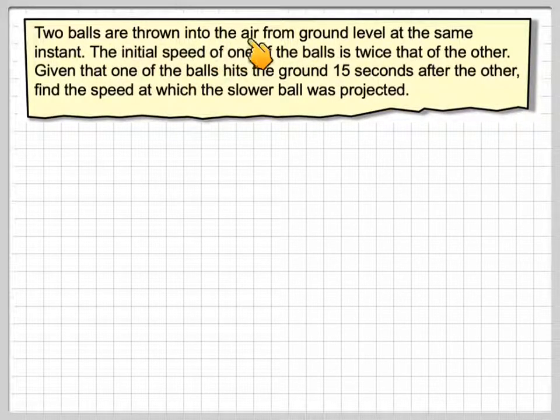Two balls are thrown into the air from ground level at the same instant. The initial speed of one of the balls is twice that of the other. Given that one of the balls hits the ground 15 seconds after the other, find the speed at which the slower ball was projected.